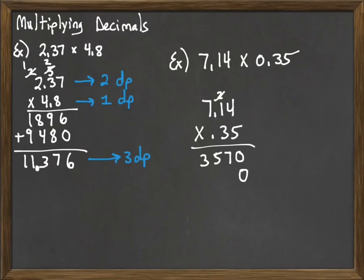Bring down the 0, and I went ahead and crossed my 2 out. And now we multiply by 3. 3 times 4 is 12, carry the 1. 3 times 1 is 3, plus 1 is 4. And 3 times 7 is 21. And then we just add everything up.